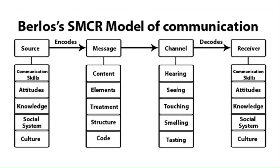Now let's discuss the factors under each of the elements. The source is where the message originates. Communication skills refer to the skill of the individual to communicate — for example, the ability to read, write, speak, and listen. Attitudes include attitudes towards the audience, subject, and towards oneself.